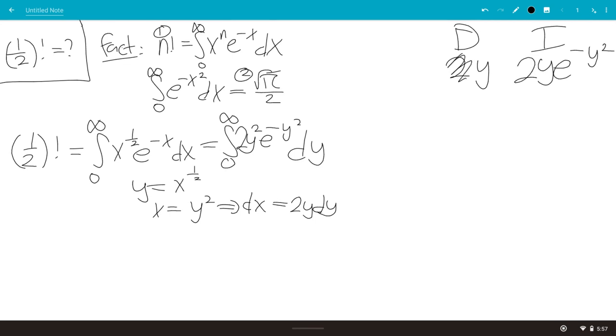We'll actually integrate 2y, and make it easier. So when we differentiate y, we get 1. And when we integrate 2y e to the minus y squared, we get minus e to the minus y squared. So we need plus minus.